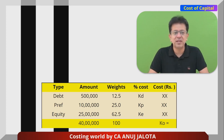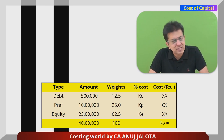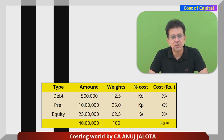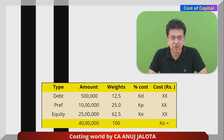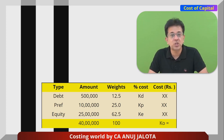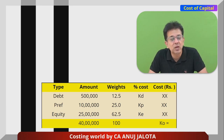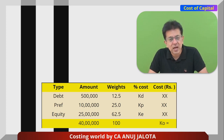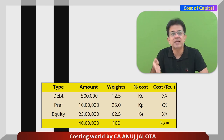The second column has the amounts. These amounts can be based upon the balance sheet values — then they are called book value weights. They could be based upon the market value of debentures, preference shares, and equity shares that you have issued — then it will be called market value weights. These are two popular types. Based upon these amounts, weights are calculated.